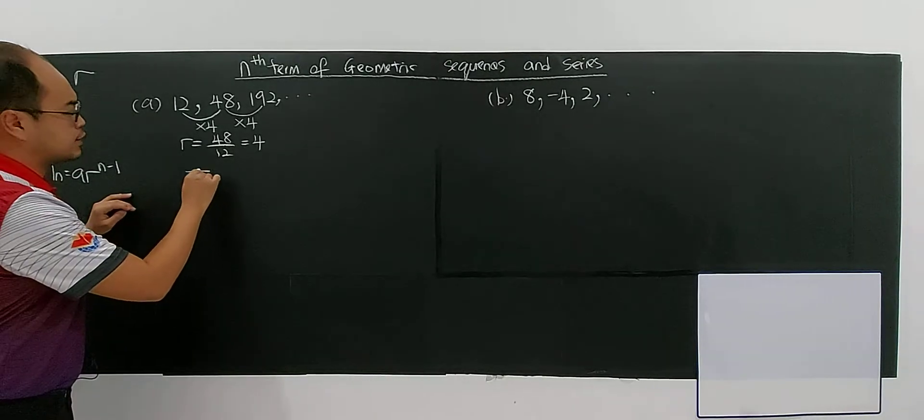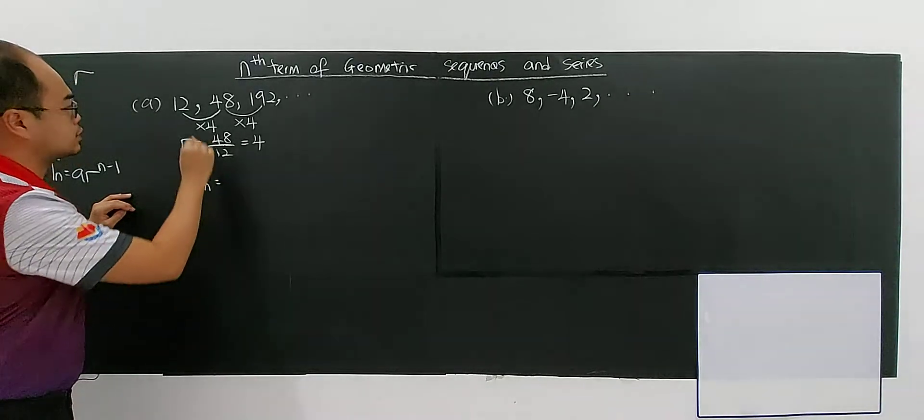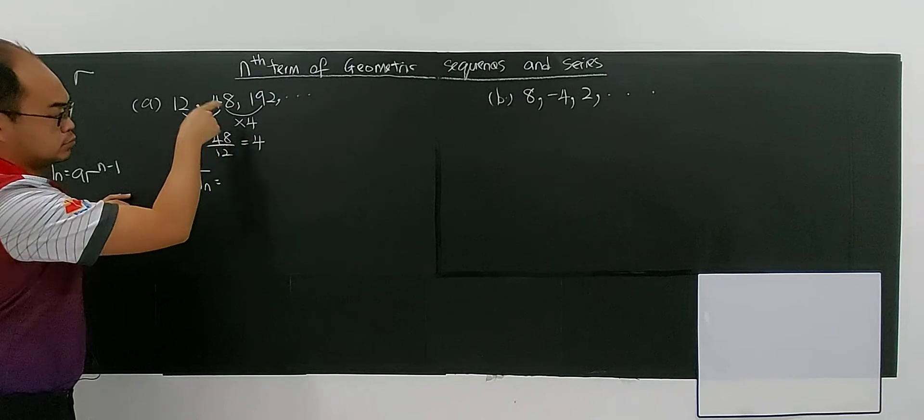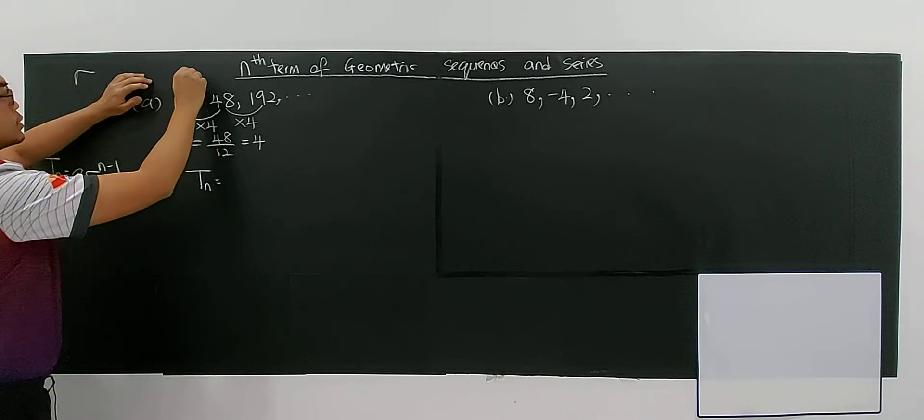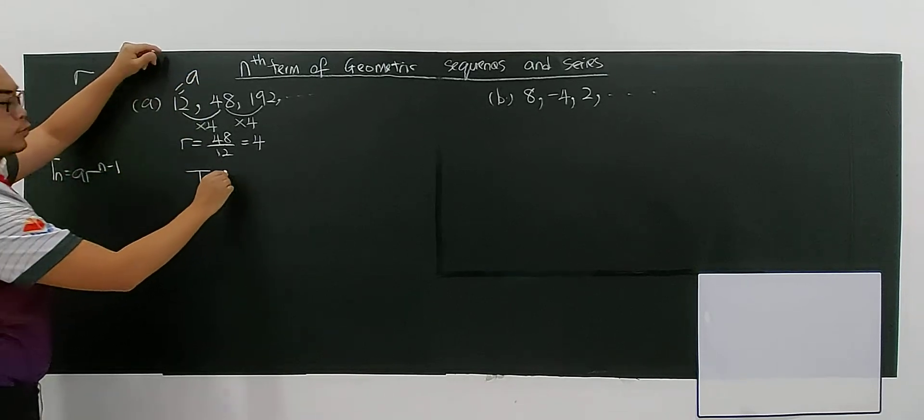So if the question asks you to find the tn for this sequence, so of course the first term, this is your first term. Your A is 12.